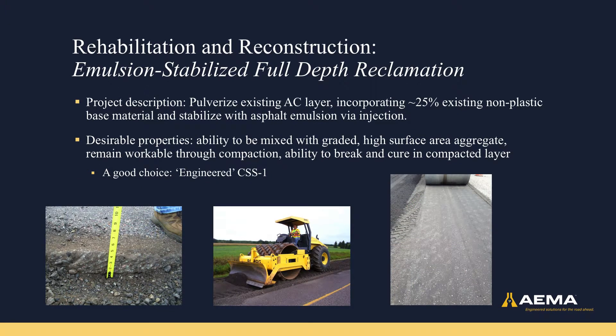Finally, we have an example of a pavement that has reached the end of its service life. The plan is to pulverize the existing layer along with about 25% of the underlying base and stabilize with asphalt emulsion. We know the blended material will contain a significant portion of fine material, meaning we need a mixing grade emulsion that remains workable enough to be injected and compacted before setting. A good choice here might be CSS 1 — that's cationic, slow-set, low-viscosity. This product is stable enough to mix with graded aggregate and has a low enough viscosity to coat everything thoroughly. This is also an application where an engineered emulsion — that is, an emulsion specifically designed for a process — might be a good candidate, since the compacted layer will need to cure with limited air and UV exposure.